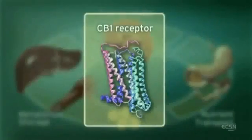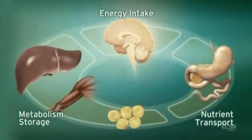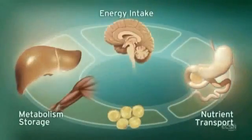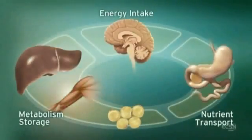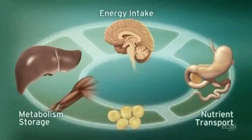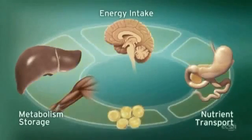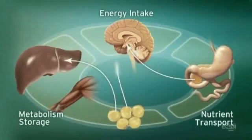CB1 receptors are located in the brain, digestive tract, muscle and adipose tissue. Integration of these central and peripheral ECS components is achieved through neuronal and hormonal signaling.